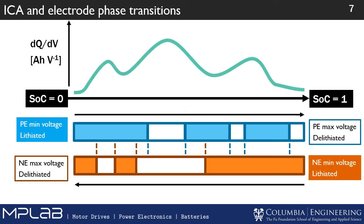What that plateau or peak in the ICA actually represents is a phase transition. This is a diagram adapted from DuBerry, who did a lot of work in ICA. Each peak represents a different area in the phase transitions of the electrodes. Each peak gives you information about the electrode's level of degradation.